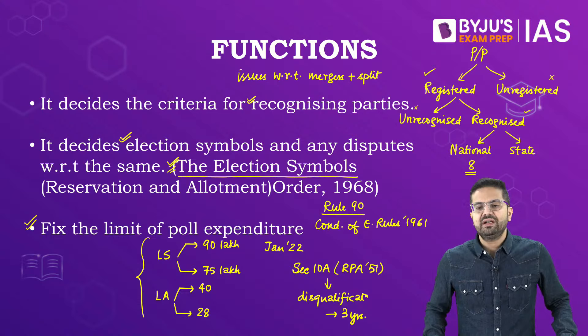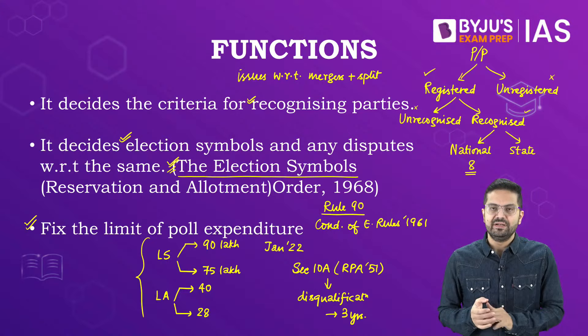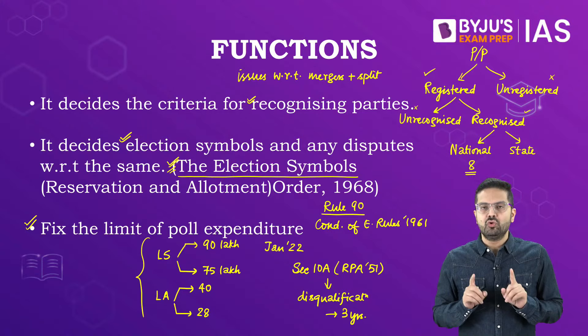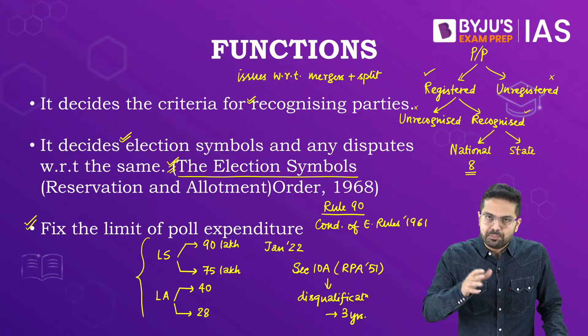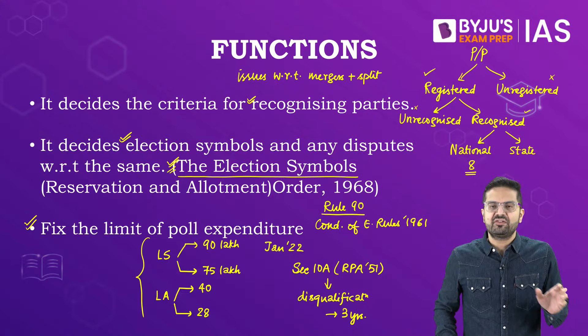Question: Opposition parties recently filed a complaint against Draupadi Murmu to the ECI for bribing voters — what is the possible course of action? Answer: As far as any election dispute with respect to the Presidential or Vice Presidential elections is concerned, such disputes can be decided only if at least 20 electors raise a dispute. The dispute needs to be raised in the Supreme Court, which has original jurisdiction to decide on such disputes under Article 71 of the Indian Constitution.